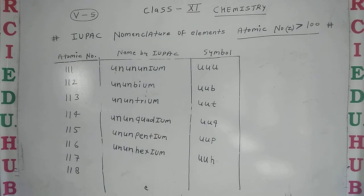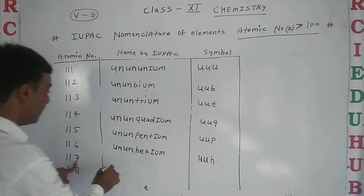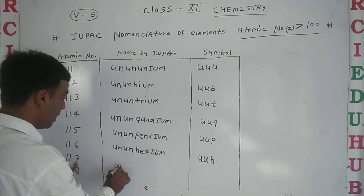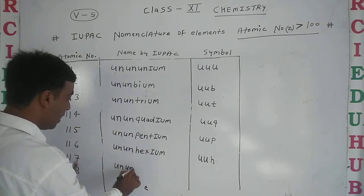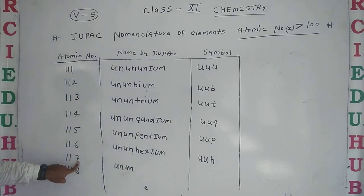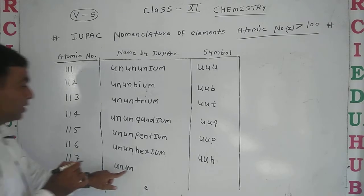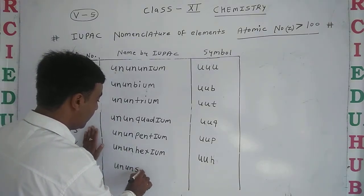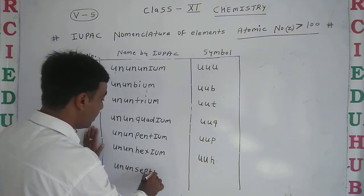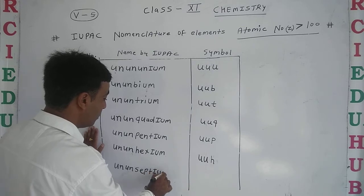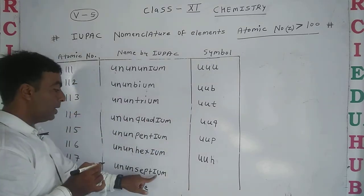Next, one one seven. For 7, the digit is 'sept'. So we use 'sept' and suffix '-ium' - ununseptium. Symbol will be U U S - Uus.